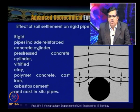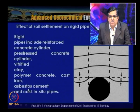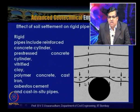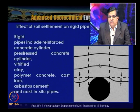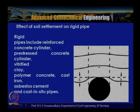Typical rigid pipes include reinforced concrete cylinders, pre-stressed concrete pipes, vitrified clay, polymer concrete, cast iron, asbestos cement, and sitho pipes. The surrounding soil settles on both sides while the inherently rigid pipe undergoes no movement, so both side prisms move relative to the central prism above the pipe, illustrating passive arching behavior.